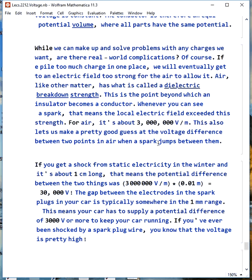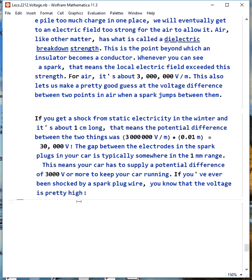Now, we can make up and solve problems with any charges we want. Are there any real-world complications? Yes, if we put too much charge in one place, we eventually have an electric field too strong for the air to allow it. We'll start ripping electrons off of air molecules. Air is like any other material in that it has a dielectric breakdown strength, and that's the point where, when you go beyond this, an insulator becomes a conductor. If you can see a spark, that means the local electric field has broken down the air around it. And that breakdown strength for air is about 3 million volts per meter, or newtons per coulomb. This also lets you make a good guess at the voltage difference between two points in air when a spark jumps between them. For example, if you get a static shock in the winter and the length of the spark is about one centimeter, that would mean the potential difference between you and the thing that shocked you is about 3 million volts per meter times one centimeter, or 30,000 volts, which is huge.